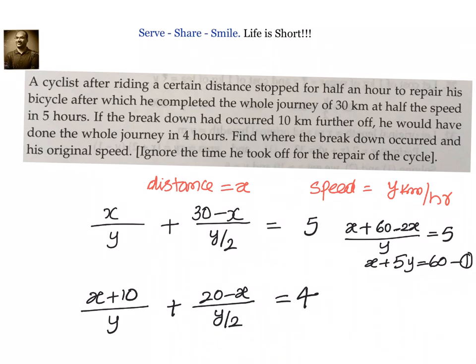Let us go to the next equation. Taking LCM, we are trying to get denominator as y. So I will have x plus 10 plus 40 minus 2x by y equal to 4. Or can I simplify this again and write down x plus 4y equal to 50.